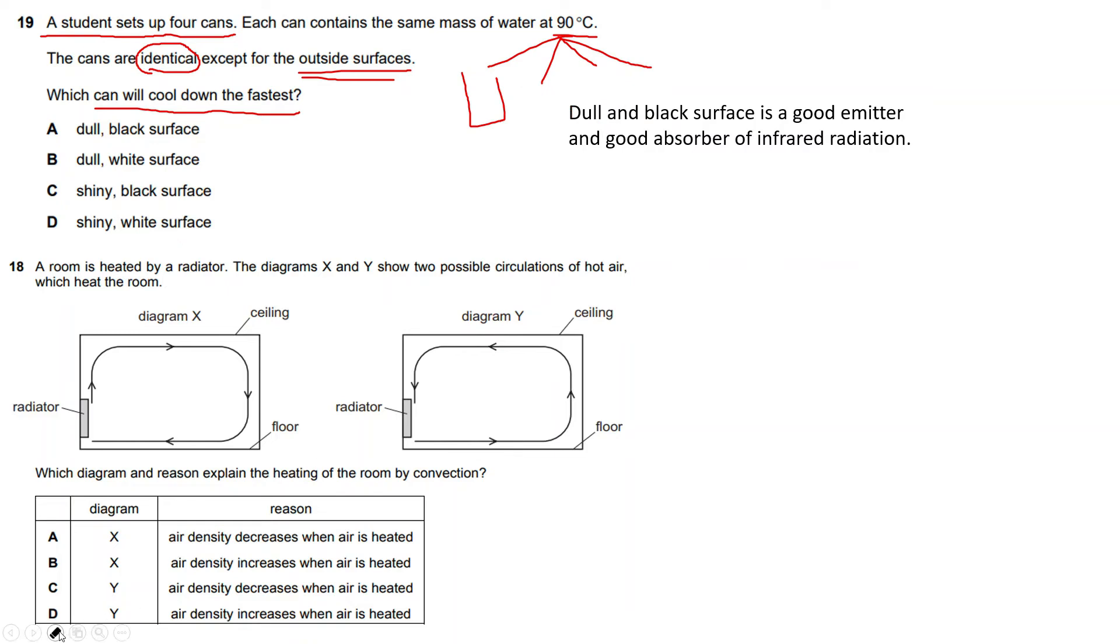Remember: dull and black surfaces are good emitters and good absorbers of infrared radiation or heat. Dull and black surfaces emit heat very quickly and absorb heat very quickly. Here it says cool down, so the can that will cool down is the one which will emit heat very quickly. Since dull and black surfaces are good emitters, the answer will be dull and black surface. This question was concerning radiation.